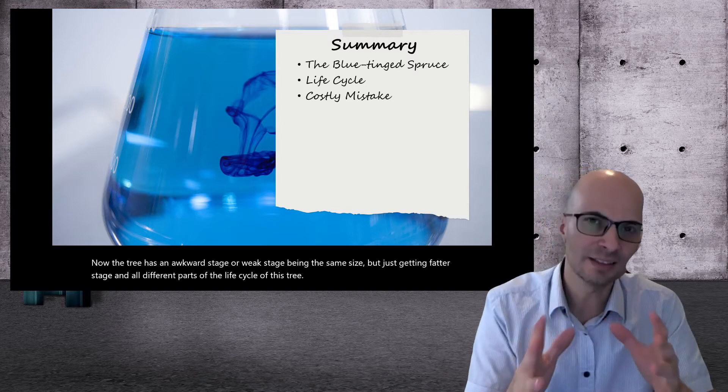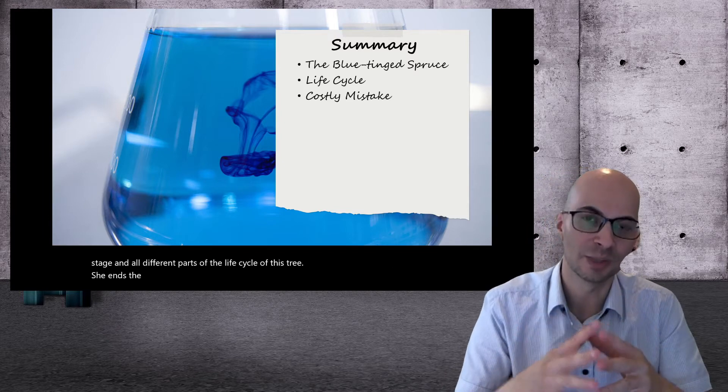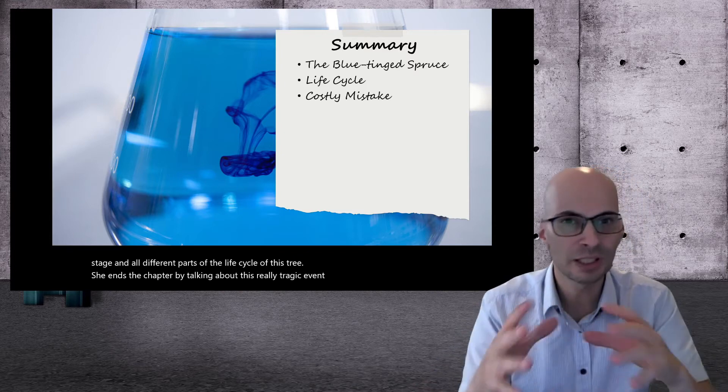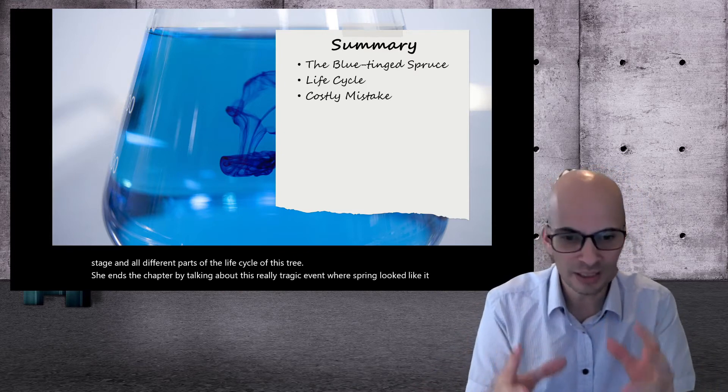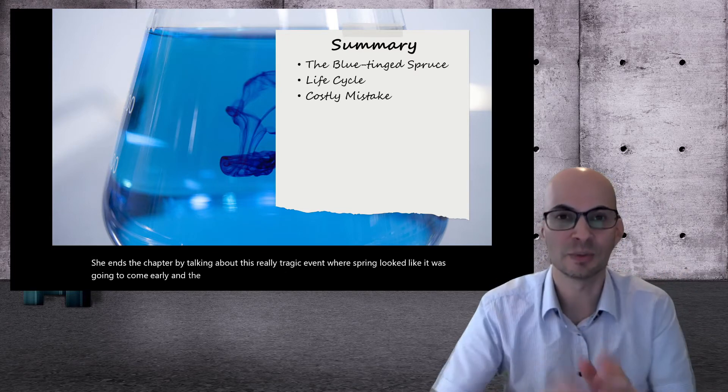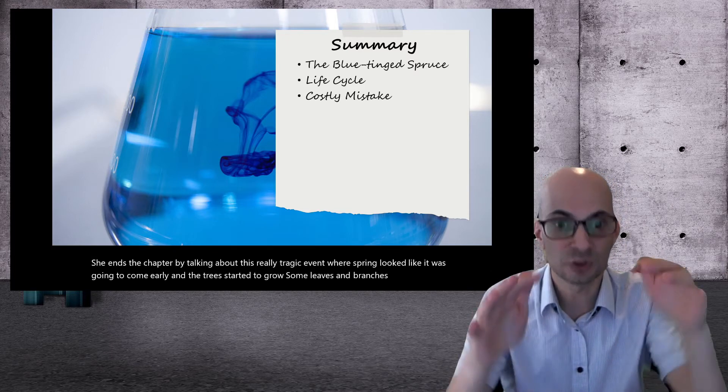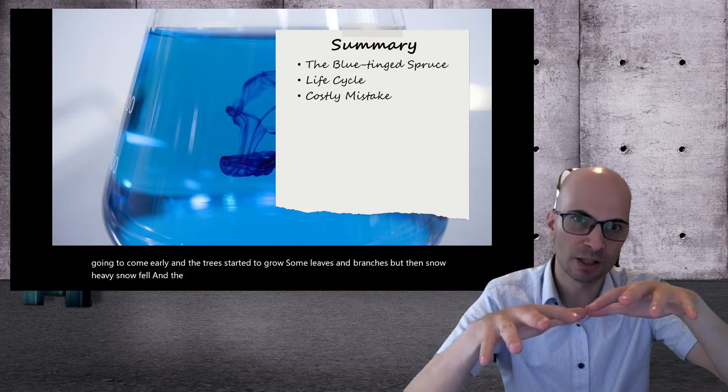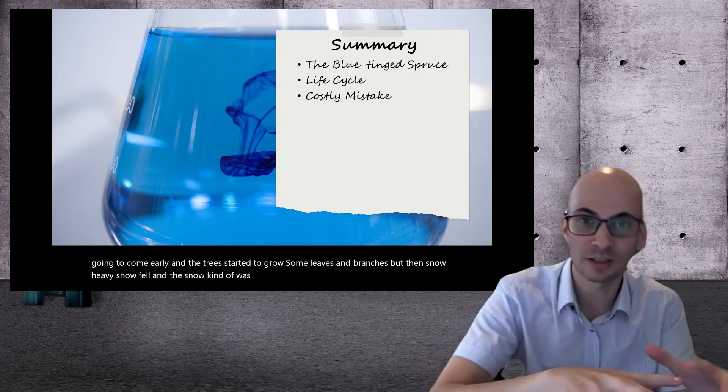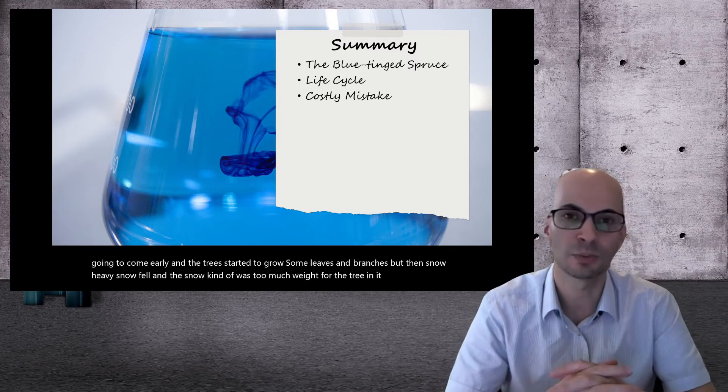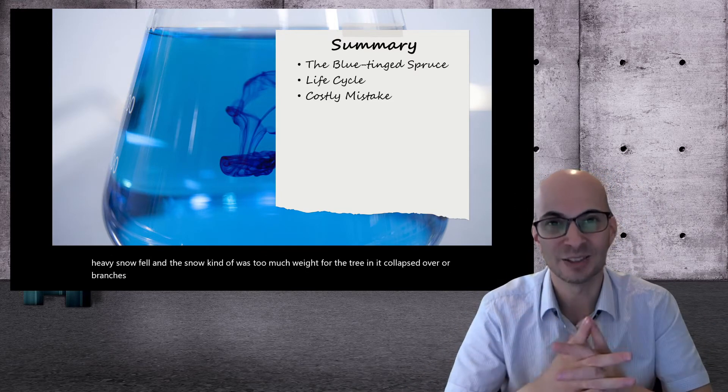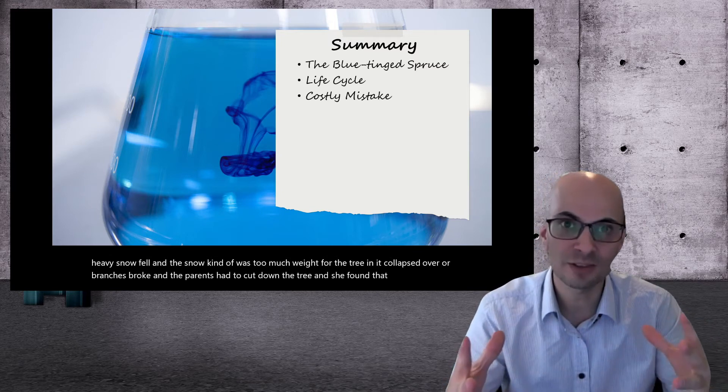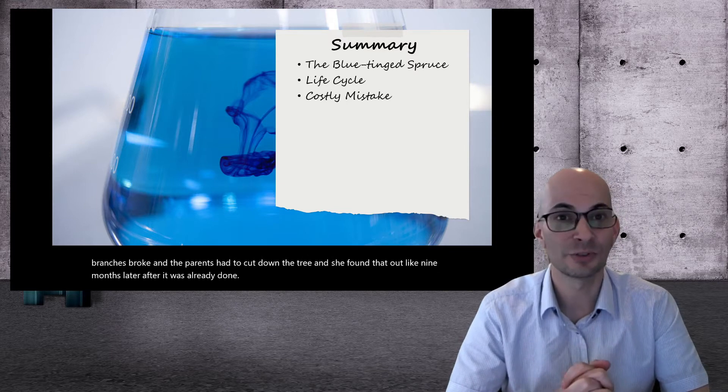Well, she ends the chapter by talking about this really tragic event where spring looked like it was going to come early and the tree started to grow some leaves and branches, but then heavy snow fell. And the snow was too much weight for the tree and it collapsed over or its branches broke and the parents had to cut down the tree. And she found that out like nine months later after it was already done. Oh, I wonder if she cried.